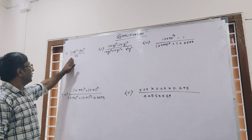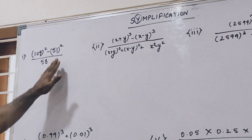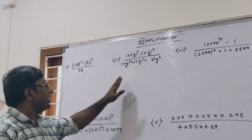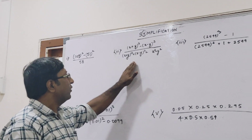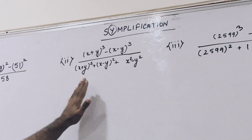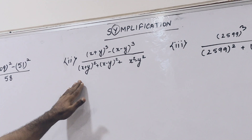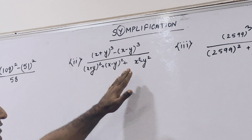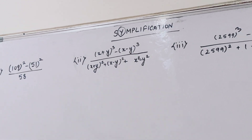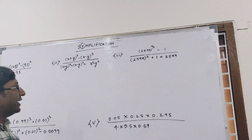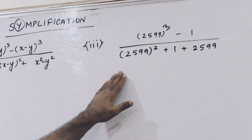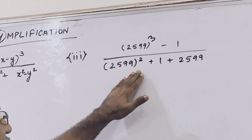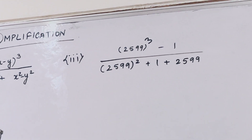Question one: 109 squared minus 51 squared, plus 58. Question two: (x+y) whole cube minus (x-y) whole cube, upon (x+y) whole square plus (x-y) whole square plus x squared minus y squared. Question three: 2599 cubed minus 1, over 2599 squared plus 1 plus 2599.